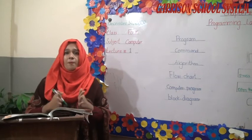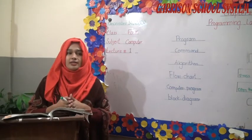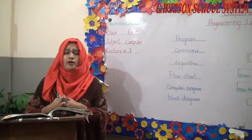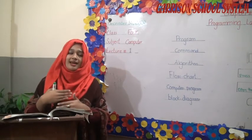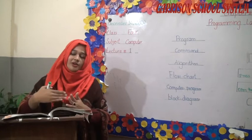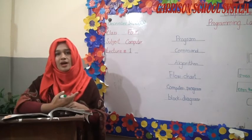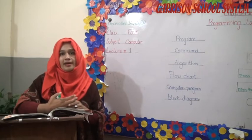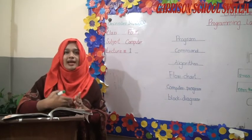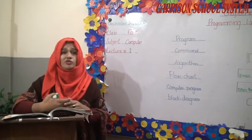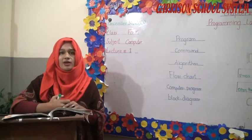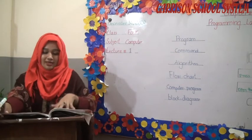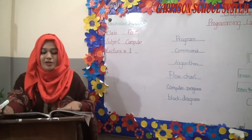Secondary storage is where you permanently store data — jaise aapke ghar mein, aapke laptop mein, aapke mobile phones mein different data hoga, like aapke childhood ki pictures. Woh data store hota hai aapke computer mein, aap usko jab chahen dekh sakte hain. Primary storage is temporary — like if the power goes out and you haven't saved your work, your data is lost because it was only temporarily stored.